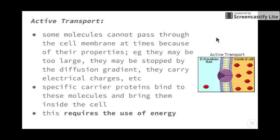The other type of movement is active transport. Some molecules cannot pass through the cell membrane at times because of their properties - they may be too large, they may be stopped by the diffusion gradient, or they may carry an electrical charge. Ions, as we said earlier, won't be able to move across the cell membrane on their own.